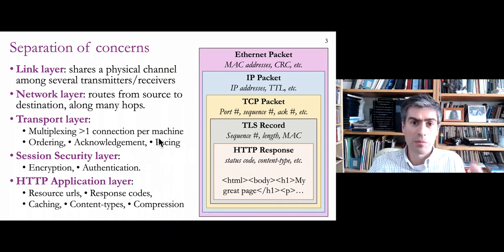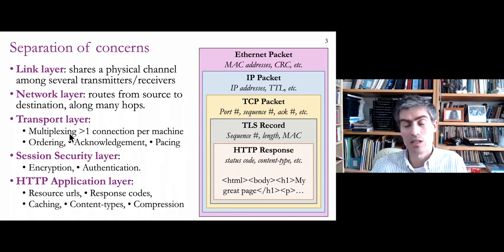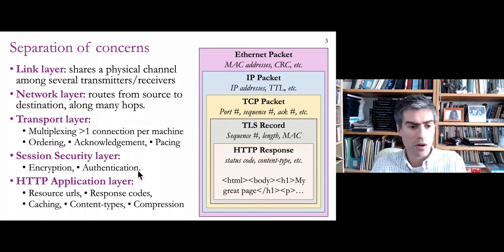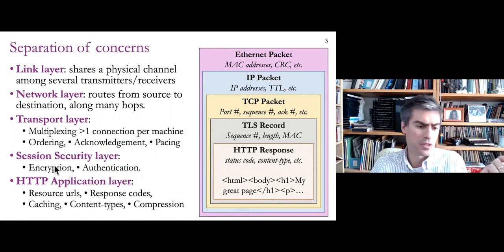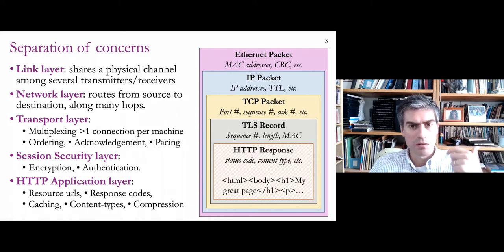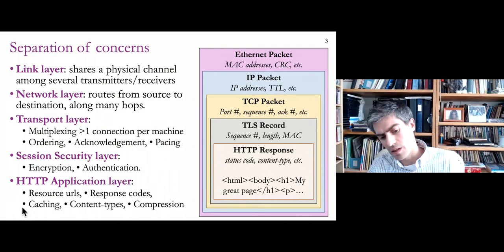At the transport layer we also introduce acknowledgements so that if a packet is dropped it can be retransmitted, and mechanisms to control pacing so we don't overwhelm the network and cause packet loss. Port numbers allow more than one connection per machine. Above that, the session/security layer adds encryption and authentication for things like e-commerce and banking. At the very top we have the HTTP application layer, where we define client-server interactions using resource URLs, response codes, caching, content types, and compression.